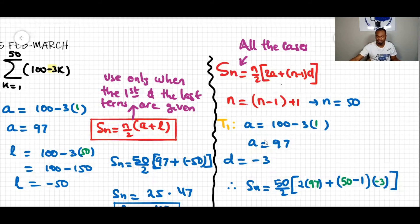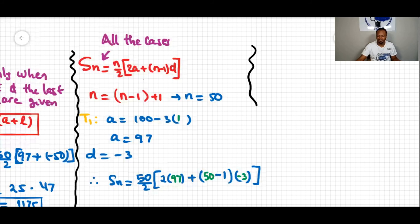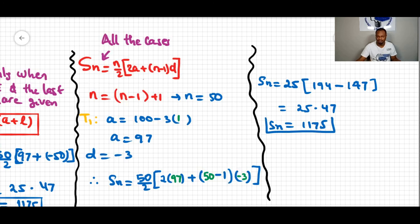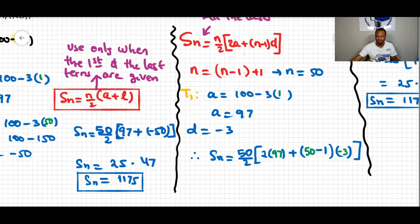Substituting into Sn = n/2 times [2a + (n-1)d]: S50 = 25 times [2 times 97 + (50-1) times (-3)] = 25 times [194 minus 147] = 25 times 47, which equals 1175. Notice this is the same answer as before.